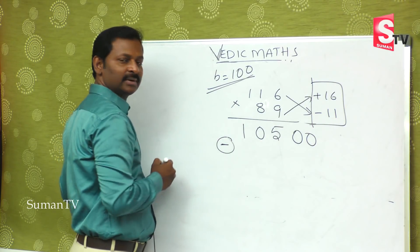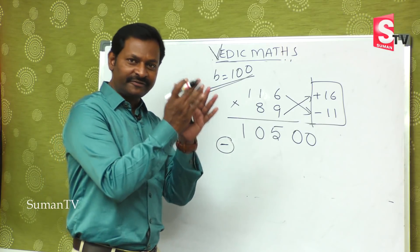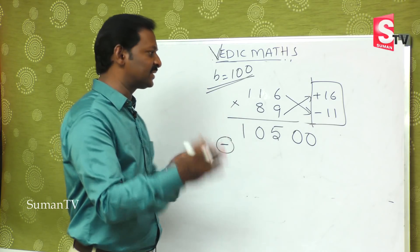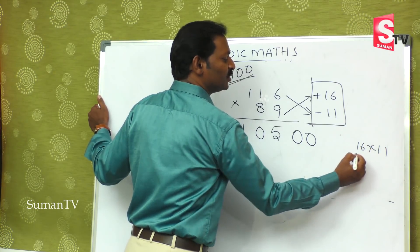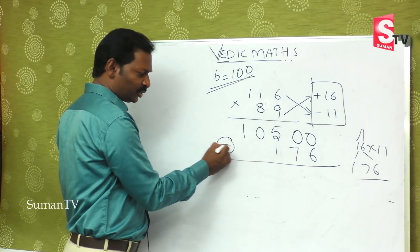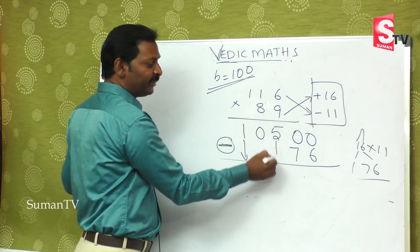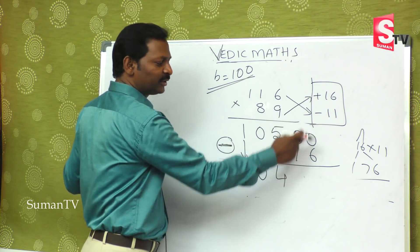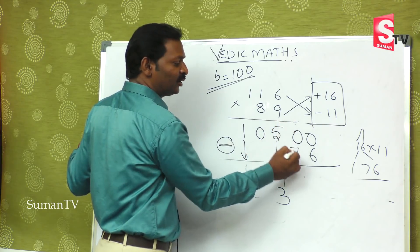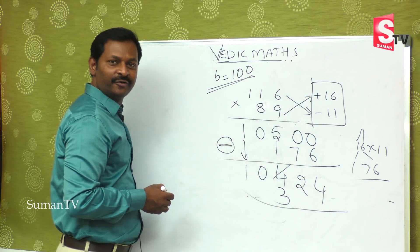Now the important part: plus into minus is minus. So 16 times 11 — using the 11-multiplication concept, the first digit remains, the last digit remains, and we add the two middle digits: 1, 7, 6 — so 176. Now 10500 minus 176: 1 remains 1, 0 remains 0, 5 minus 1 is 4, but borrowing is needed, so using the base complement method: 9 minus 7 is 2, and 10 minus 6 is 4. The answer is 10324.